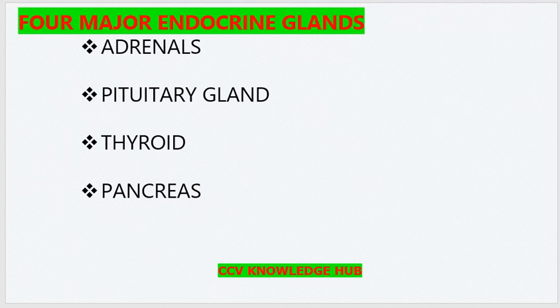Let's see four major endocrine glands: adrenals, pituitary, thyroid and pancreas.